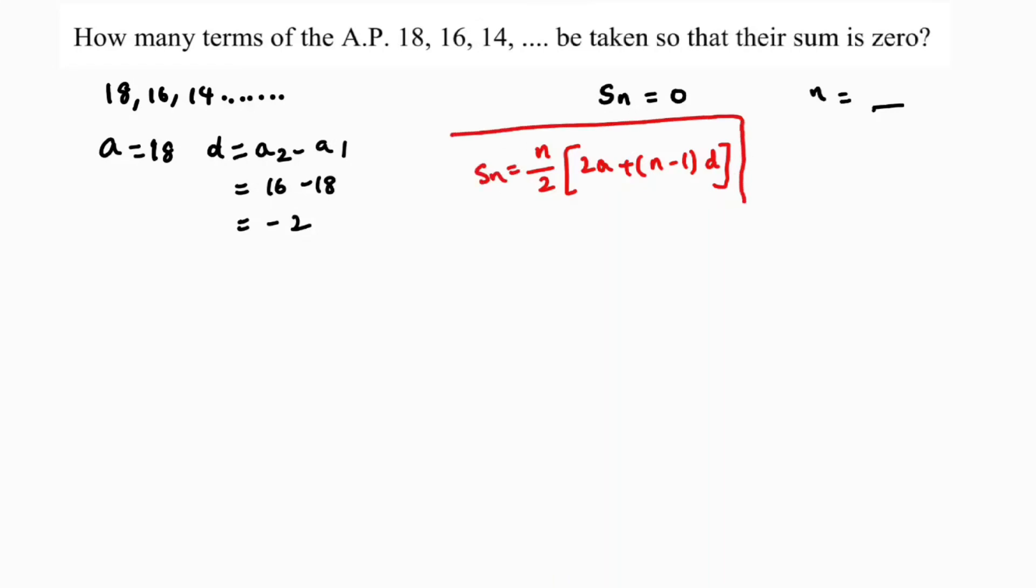Now if I substitute the values, SN equals N by 2 times 2A, A is 18, plus N minus 1 into minus 2 equals 0.